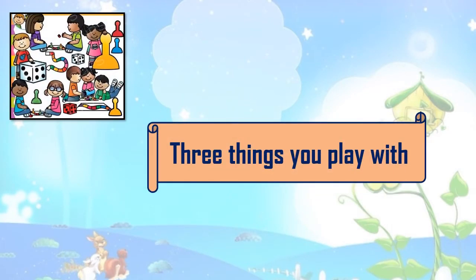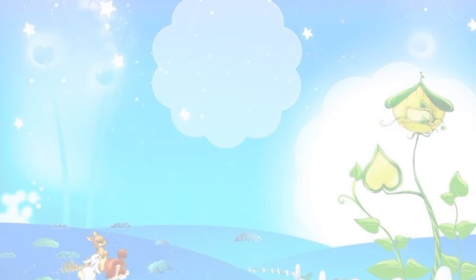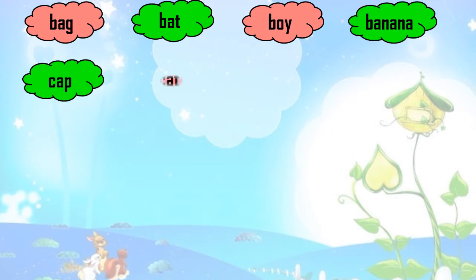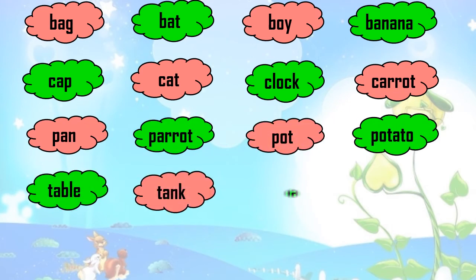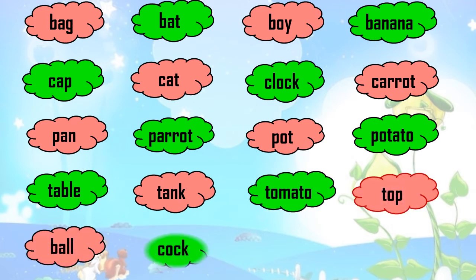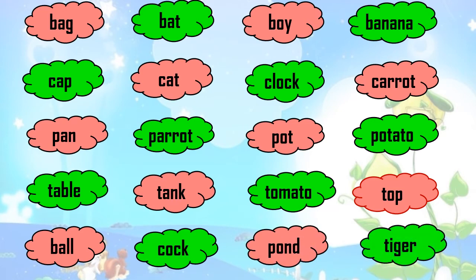Three things you play with. Here some game names are hidden. We have to find out the three things with which we play. Let's see the chart once again: Rat, Bat, Boy, Banana, Cat, Clock, Carrot, Pan, Parrot, Pot, Potato, Table, Tank, Tomato, Top, Ball, Cock, Pond, and Tiger. Let's begin with the first row — yes, it's there: a Bat.